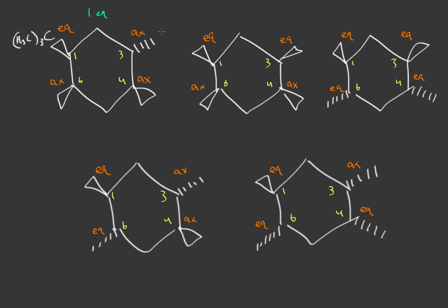For the last molecule, assuming carbon one is equatorial: carbon three is axial because it's odd and trans; odd to even but cis gives equatorial; even to even also cis gives equatorial. Now counting the equatorials: the first molecule has one equatorial, the second has two, the third has four, the fourth has two, and the fifth has three. Ranking by most equatorials: third is rank one, fifth is rank two, and first is rank five.